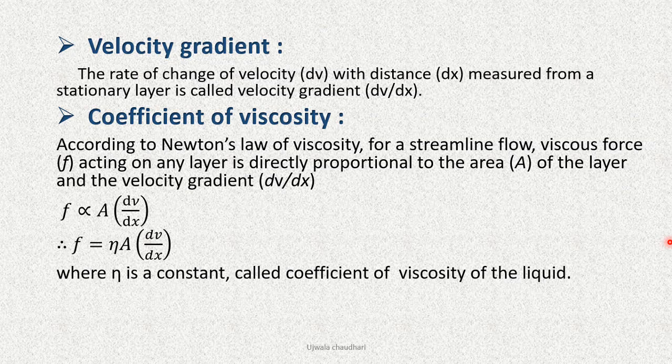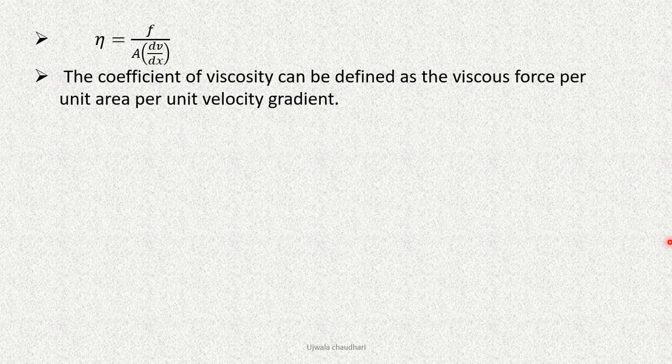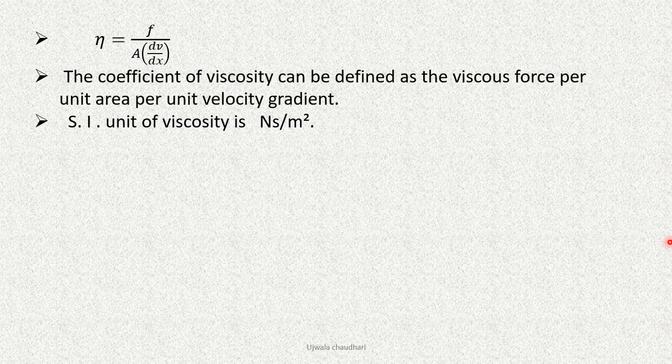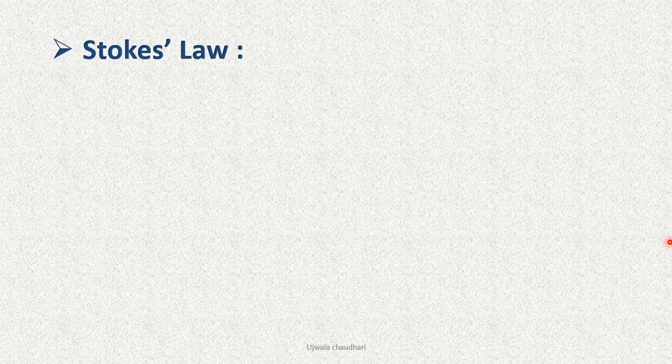η = f/(A·dv/dx). The coefficient of viscosity can be defined as the viscous force per unit area per unit velocity gradient. SI unit of viscosity is newton second per meter square.